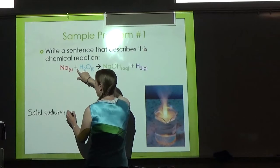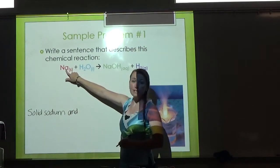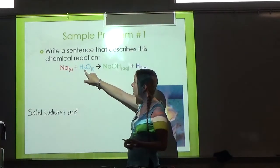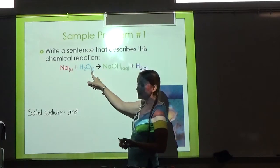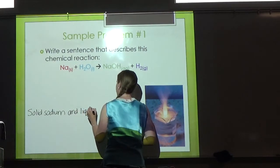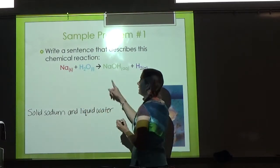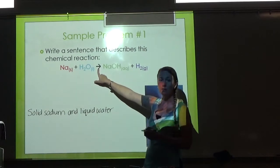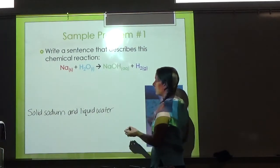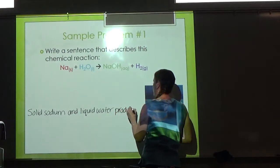H2O is just water—liquid water in this case. So 'and liquid water.' Then I'm at my arrow, so I can put 'yields,' 'produces,' or 'react to form.' I wrote 'react to form' on the previous slide, so I'll do 'produces' this time.